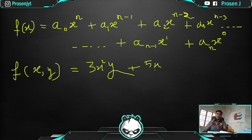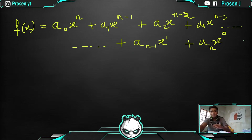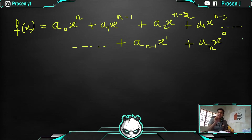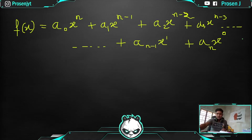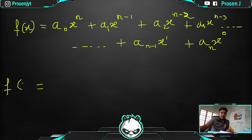Now, after understanding what f(x) means, let's look at the polynomial format on the blackboard. This is called a finite polynomial series. Here you can see a₀, the first coefficient of the first term, and the variables are x to the power n, x to the power n−1, x to the power n−2, and so on — the power is decreasing — all the way down to x to the power zero. All of them are added together.